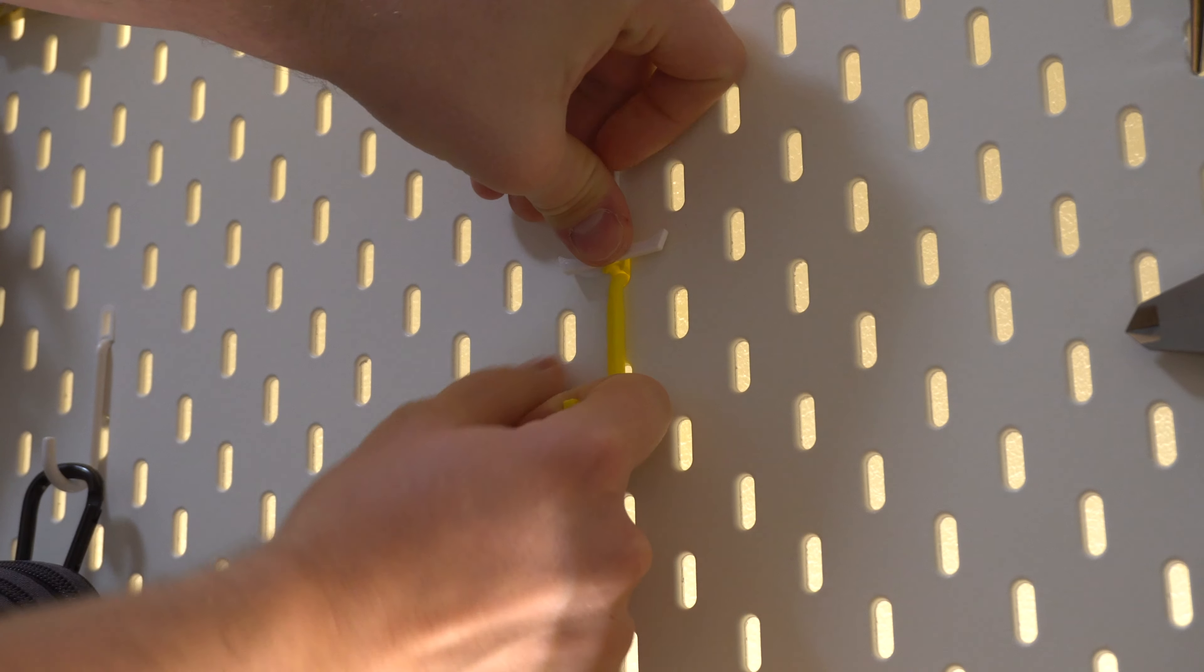Another trick can be to use the included tool to get some leverage. First, put the plug in place, pull down and outwards on the hook, and use the tool to press the plug in.